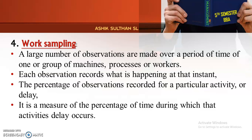In work sampling, each observation records what is happening at that instant. The percentage of observations recorded for a particular activity or delay is calculated. We can identify delays, collect data, and measure activity levels to rectify and improve the process.